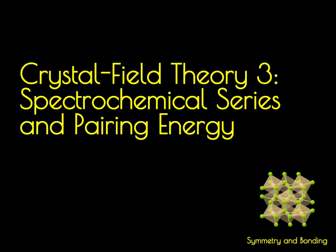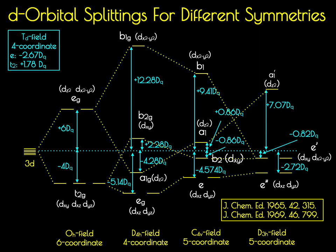In this video, we'll delve into the spectrochemical series and the concept of electron pairing energies, both of which can be used to rationalize the properties of transition metal complexes. Both of these concepts also have some basis in crystal field theory. In previous videos, we showed that one can derive the d-orbital splitting energies for transition metal complexes contained in a number of different coordination environments. In this video, we'll start to apply those concepts to understand the properties of transition metal compounds.